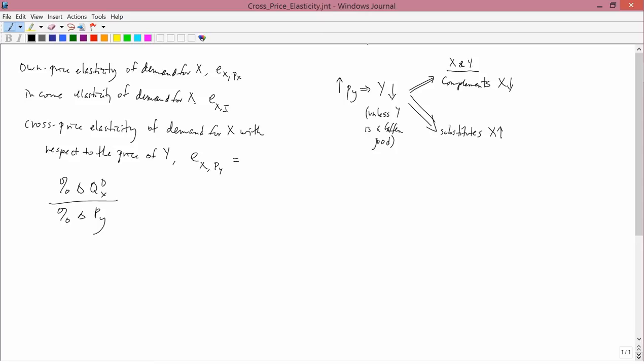Let's see what these two cases imply for the cross-price elasticity, which is percent change in quantity demanded of x divided by the percent change in the price of y. In the first case, the percent change in quantity demanded of x is negative because x decreases. The percent change in the price of y, well, we started out by saying that the price of y increases. And therefore, this thing is negative.